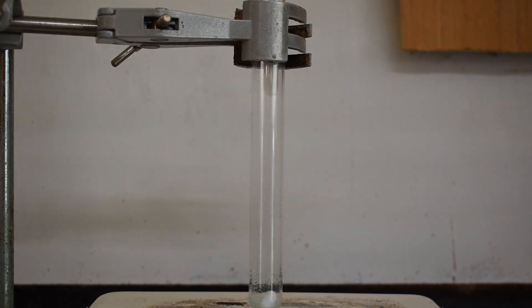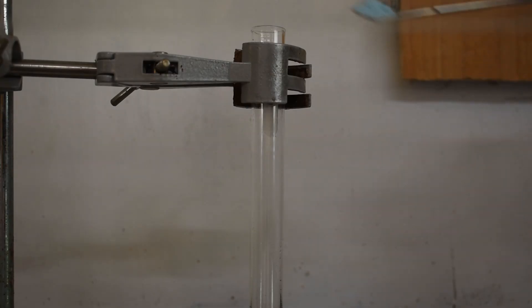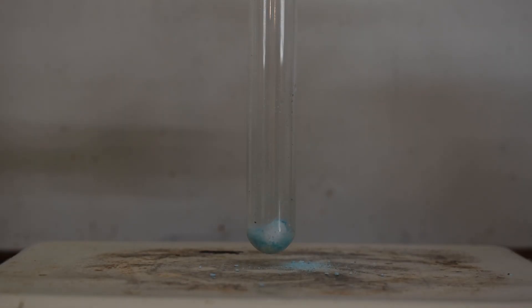First, I added a magnetic stir bar to a test tube and then sloppily poured in a small scoop of copper two sulfate. To this, I added a few milliliters of water and waited for it all to dissolve.